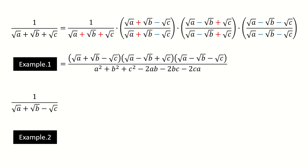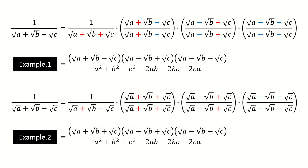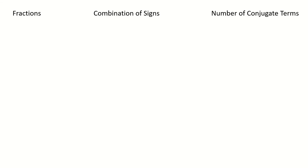Let's see another example. Suppose we are given this fraction for the three-term case. Again, we multiply the other three conjugate terms, so we got here. And if you compare the denominators, you find they are exactly the same.